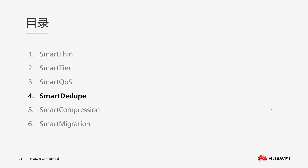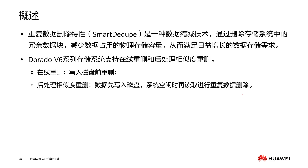Hello everyone. In this lesson we will continue to learn about the smart dedupe feature and the smart compression feature. First, let's learn about smart dedupe. Smart dedupe is also known as the feature of duplicate data deletion. Its abbreviation is sometimes simply called heavy deletion.